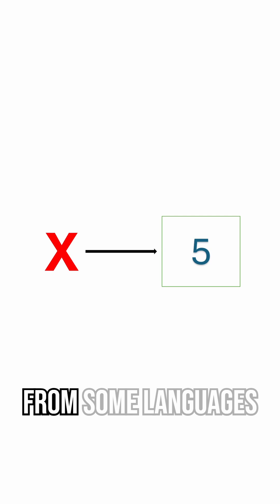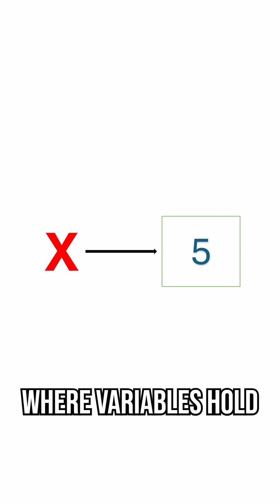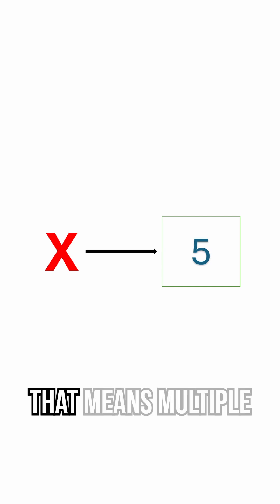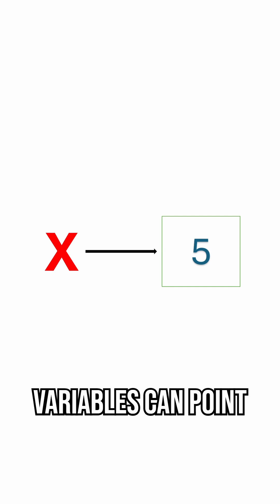This is different from some languages where variables hold values directly. In Python, everything is an object, and variables are just references. That means multiple variables can point to the same object.